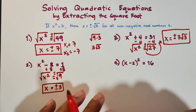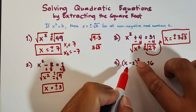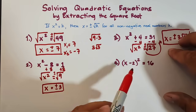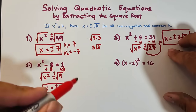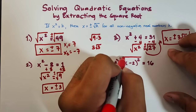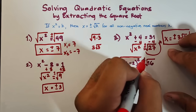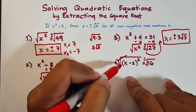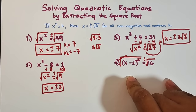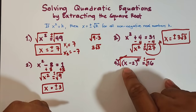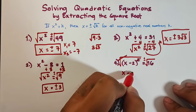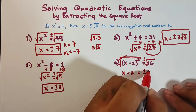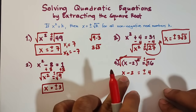Let's continue with number 4. This one is a little different — we have (x minus 2) squared is equal to 16. Don't worry, it's not difficult. As you can see, it's already in the required pattern so we can easily extract the square roots. To get the square root, we cancel out the exponent, so what remains on the left is x minus 2, and on the right the square root of 16 is positive or negative 4.